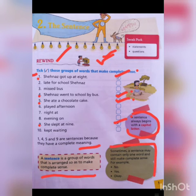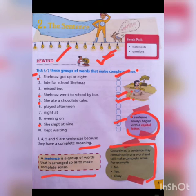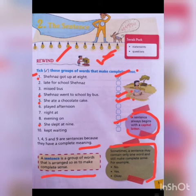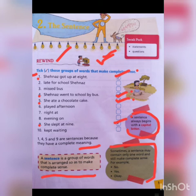Sometimes a sentence may contain only one word and still make complete sense. For example: 'No,' 'Yes,' 'Okay.' Sometimes a sentence has only one word, but that word still gives a complete sense and complete meaning. If you answer someone with 'No,' that is a complete sense. If you answer 'Yes,' that is also a complete sense. And 'Okay' is also a complete sentence.